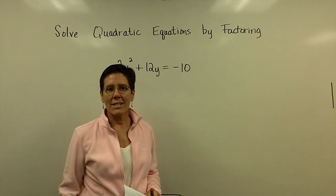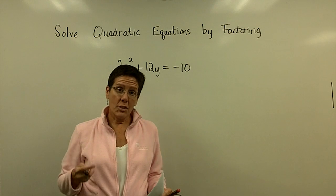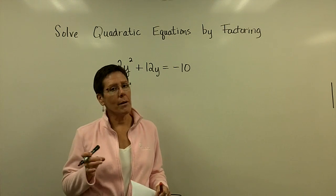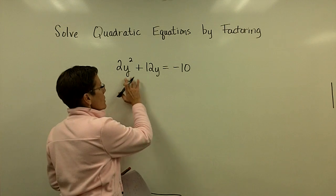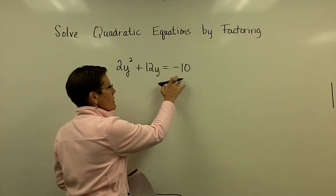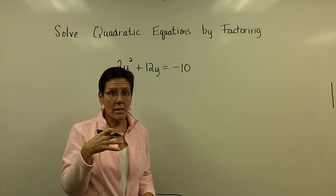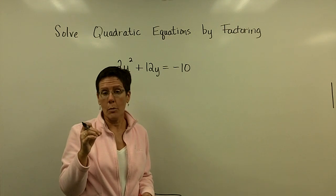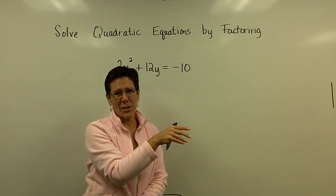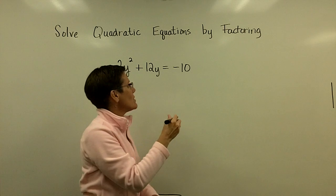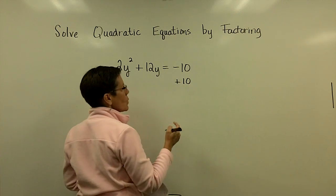Finally, one more quick clip on solving quadratic equations by factoring. The problem in this next example is that this equation is not set equal to zero. That rule we talked about was called the zero product rule. It wasn't called the negative 10 product rule, it's only the zero product rule. So you have to get zero on one side of this equation.